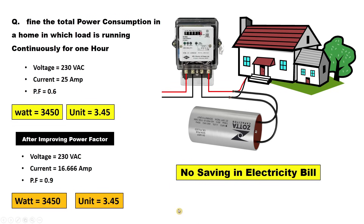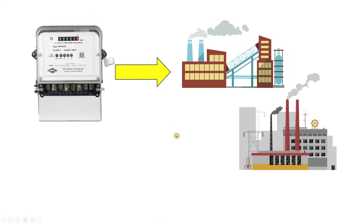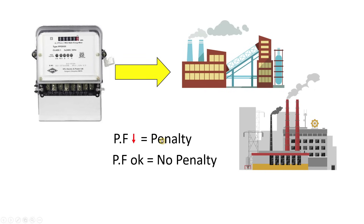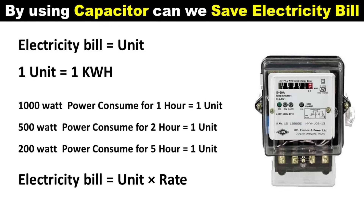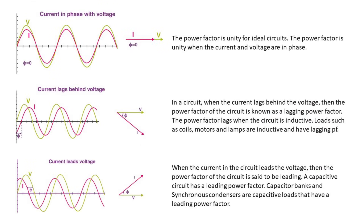However, improving the power factor does increase the lifespan of electrical devices in your home. Additionally, in industries, a low power factor in the power supply results in a penalty charge. If the power factor is properly maintained, no penalty is paid. Similarly, if your home has a three-phase power supply with a low power factor, you may be paying a penalty — improving the power factor can help you avoid this.